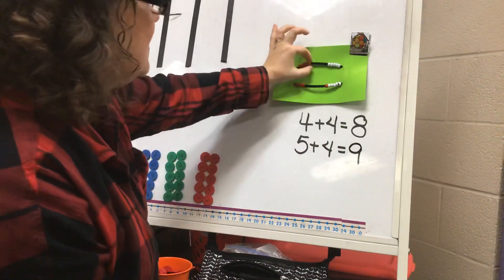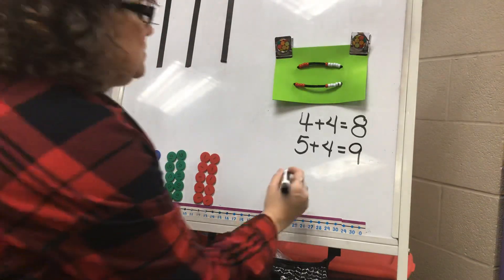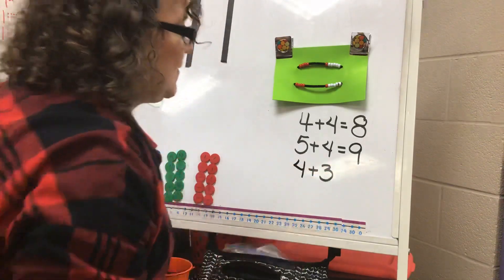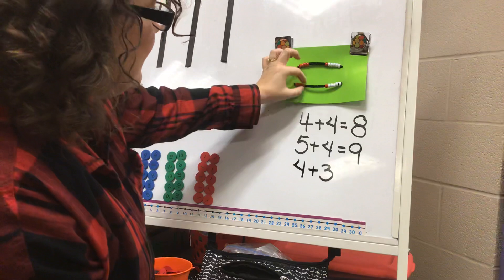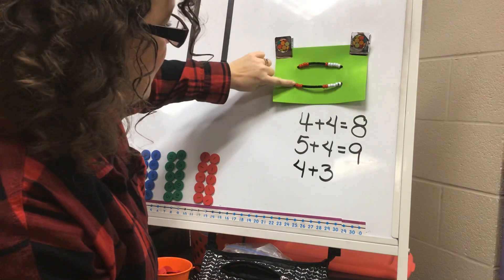Let's go back to our original double fact of four plus four. Now I want to change it to a one less fact. My near double would be four plus three, so I'm gonna have to change my Rekenrek. Now I have four and three.